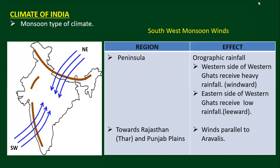We are starting with chapter number 4, that is climate of India. India has a monsoon type of climate. India receives rainfall from southwest monsoon winds. It also receives rainfall from northeast trade winds.